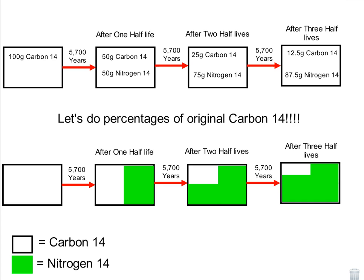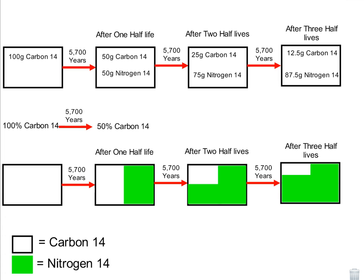And of course, there's another option. We could do it in percentages. So we have 100% of carbon-14. After one half-life, we have 50% carbon-14 left. After another half-life, we only have 25% of carbon-14 left. And after another half-life, we would only have 12.5% of carbon-14 left over. So these are the various ways in which you can visualize this to understand the concept of half-lives.